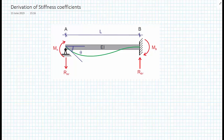In the picture given, we have a beam structure that is a propped cantilever, so it's indeterminate. What we're going to do is calculate the unknown moments MAB — the moment at A pointing towards B — and MBA — the moment at B pointing towards A — as well as the reactions at A and B, and finally calculate theta A.